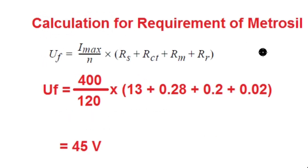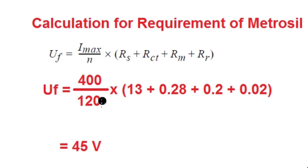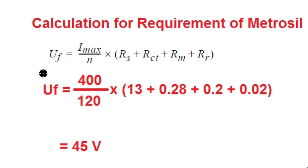Now checking whether metrosil is required: calculate Uf under maximum earth fault condition. Uf = (Imax / n) × (RS + RCT + Rm + Rr) = (400 / 120) × (13 + 0.28 + 0.2 + 0.02) = 45 V. Since Uf = 45 V is much less than Ukn = 34 V — actually Uf < Ukn — the peak voltage formula yields a negative value, meaning the metrosil is not required in this case.